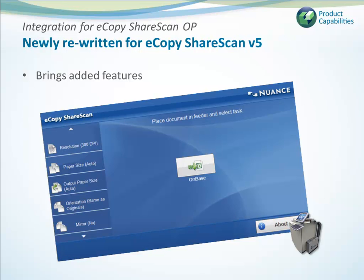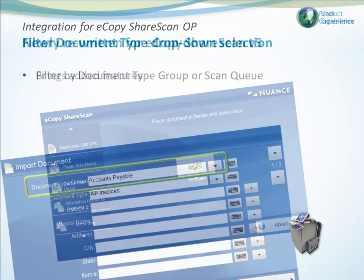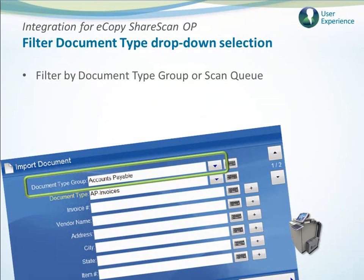Like being able to filter the document types for selection. This helps to speed the process and make it easier for users while they are at the device. You can filter document types by either Document Type Group or by ScanCube.